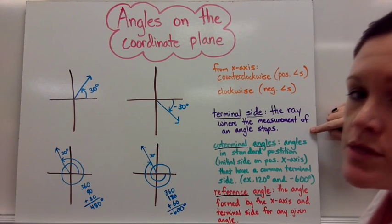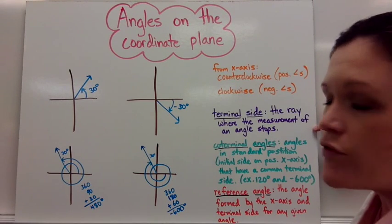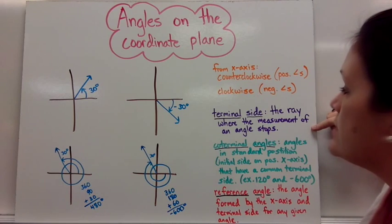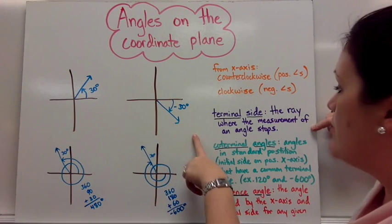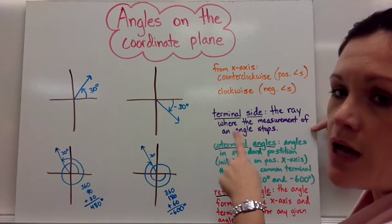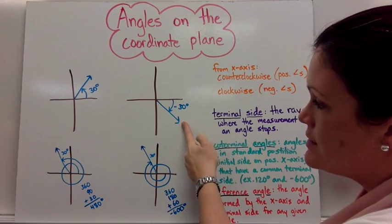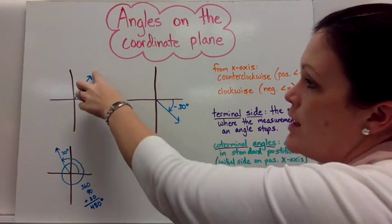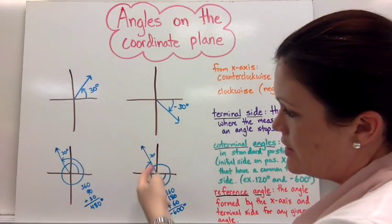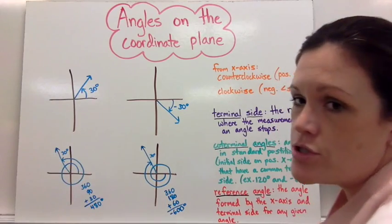The terminal side is important to know if they refer to that. The terminal side is the ray, like my blue ray right here, where the measurement of the angle stops. So where I measured it and it stopped, just that little ray is called the terminal side of the angle. That one, and that one, that one right there, and that one right there - those are the terminal sides.